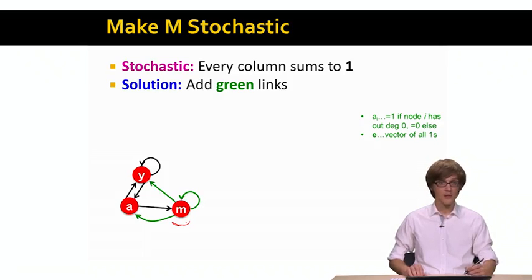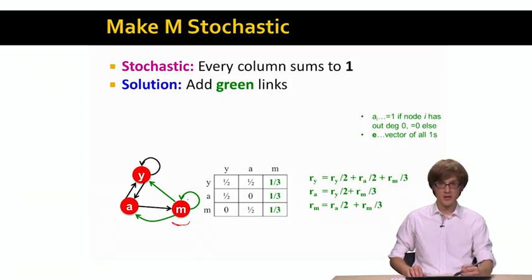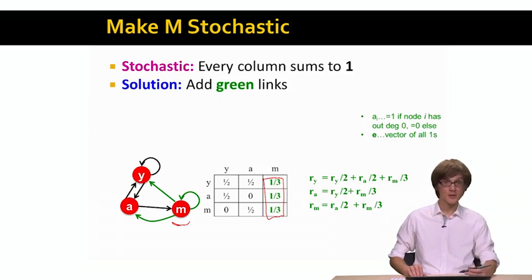So now, if we add this random teleportation that occurs with probability one, we can basically think of this as adding the green edges from node M to any other node in the network, including the self edge. This means that our matrix M now got transformed, and our column for M, for node M, now has these values of 1 over 3 in it. So, the column sums to 1, and we get the stochasticity property of matrix M.